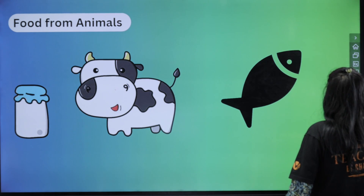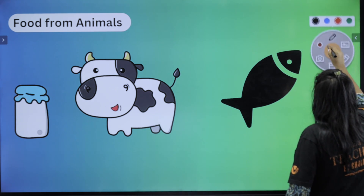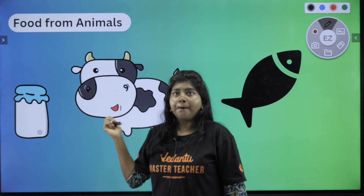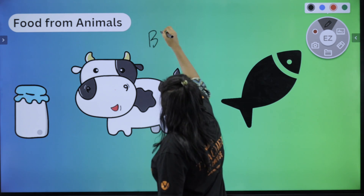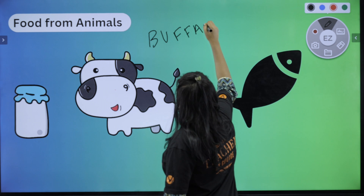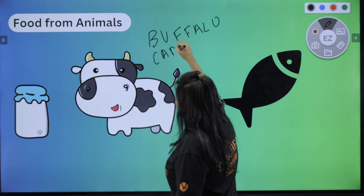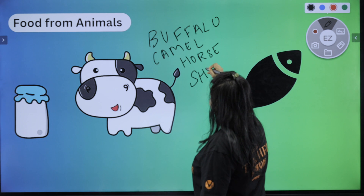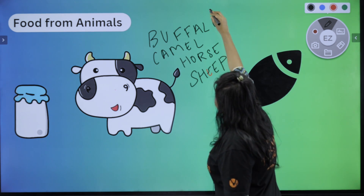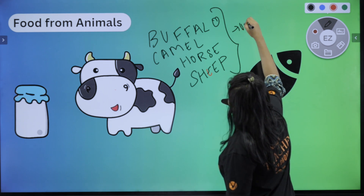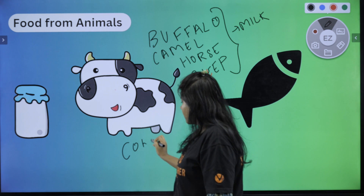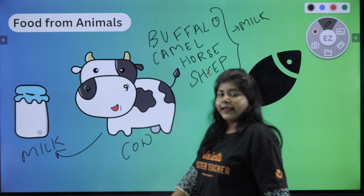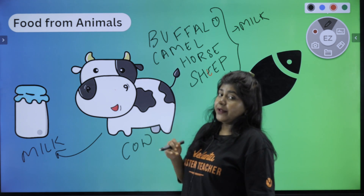Next, we will use the animals. In the animals, we will use food. For example, we will use milk. That is not a cow — buffalo. We will use the cow. We will use the camel. We will also use the horse. We will also use the sheep. The most important thing is cow. The cow gives milk.